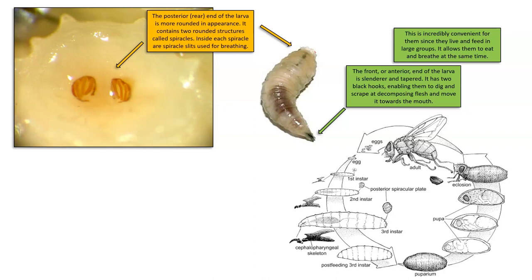On the posterior or rear end of the larva is a rounded end that contains two rounded structures called spiracles. Each spiracle has a series of spherical slits used for breathing — these are essentially the lungs. This is beneficial because when they are eating in masses, they can bury their head into the decomposing tissue and continuously eat while continuously breathing out of the rear end. Respiratory gases are exchanged on this end while they eat out of the front end — a really effective adaptation.